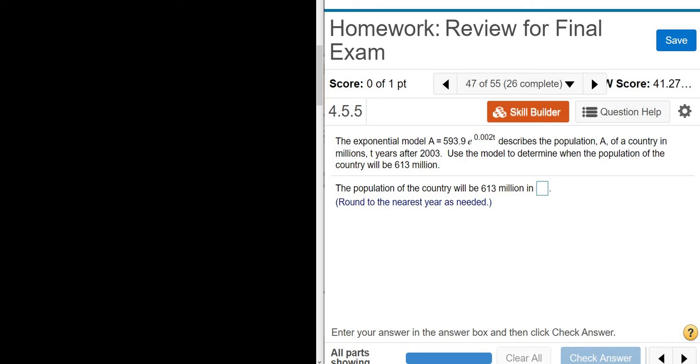The exponential model, a equals 593.9 times e to the .002t, describes the population a of a country in millions, t years after 2003. So let's go ahead and write that formula down. So a is equal to 593.9, and then it's e to the .002t. And this tells us the population of a country t years after 2003.